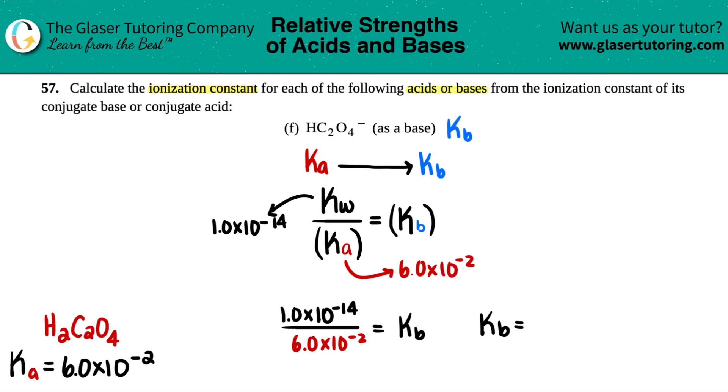And two sig figs. So 1.7. 1.7 times 10 to the negative 13th.